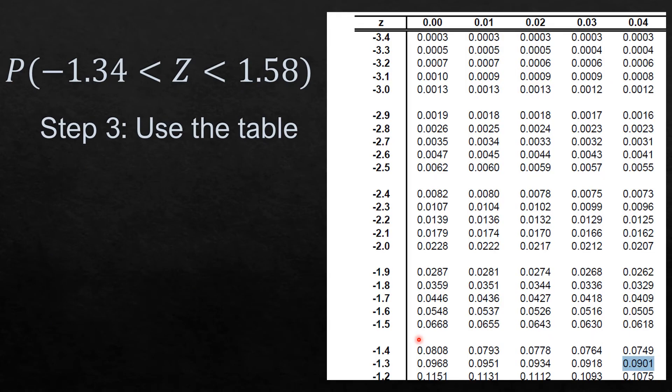We are going to find the corresponding probability for Z is less than negative 1.34. We have negative 1.3 and 0.04, so that will be 0.0901.